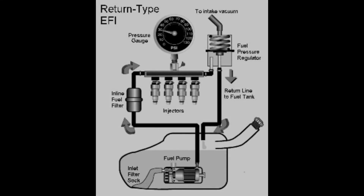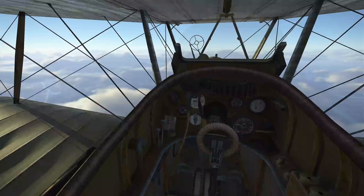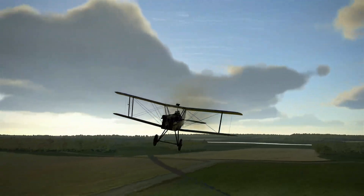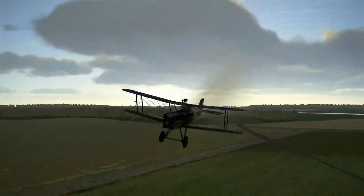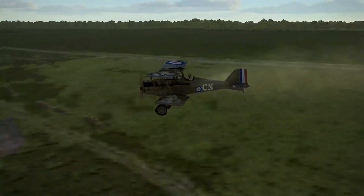Nowadays, everybody knows what an electronic fuel injection system is, but very few people understand the complexities of a carburetor. In a World War I aircraft, this was a mechanical device operated by the mixer control — basically a mixing chamber to get the right amount of fuel to the right amount of air for perfect combustion.